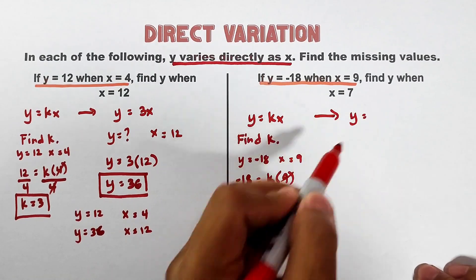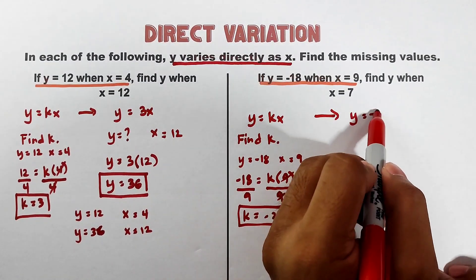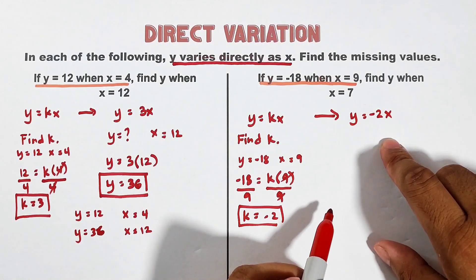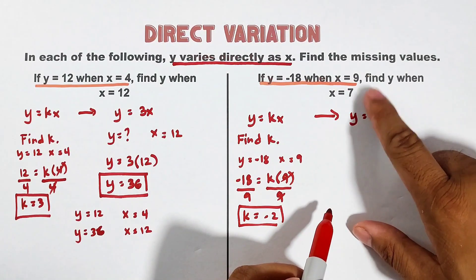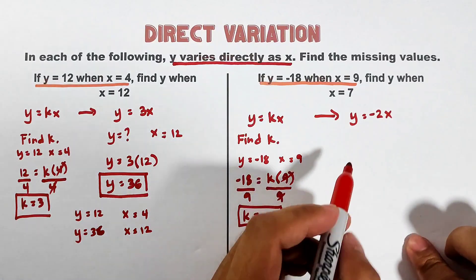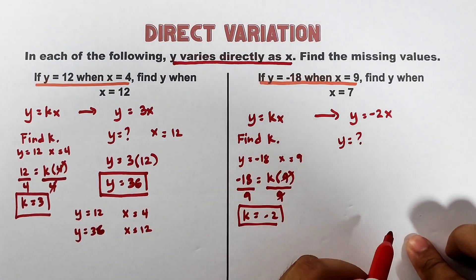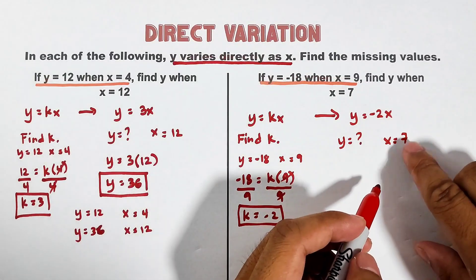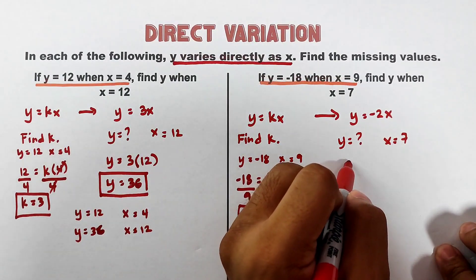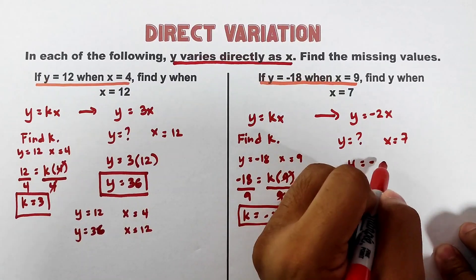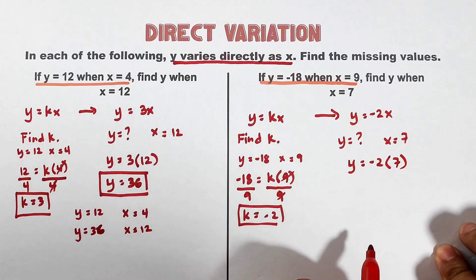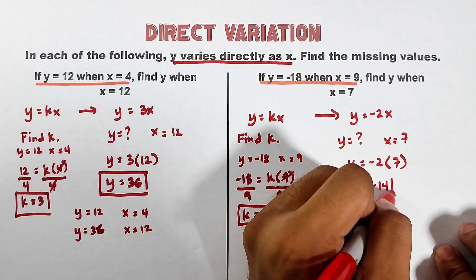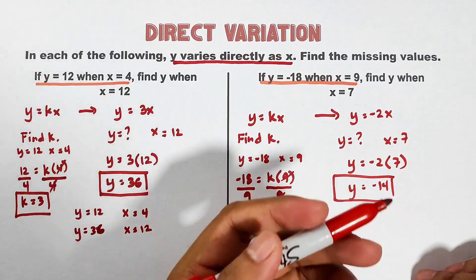Using the constant k = negative 2, the working equation becomes y = negative 2x. To find y when x is equal to 7: substituting gives y = negative 2 times 7, so y = negative 14.